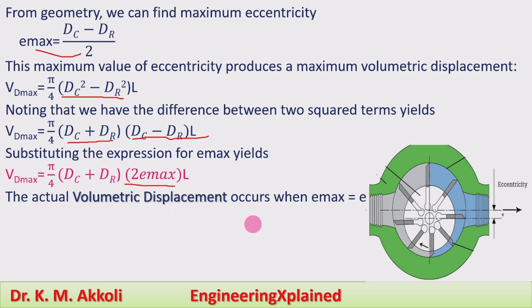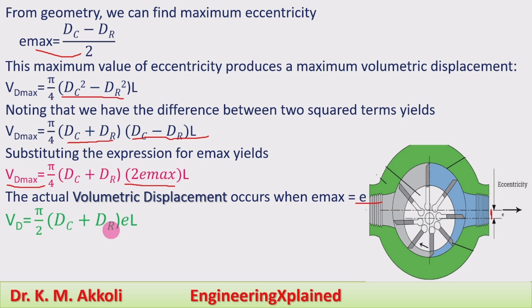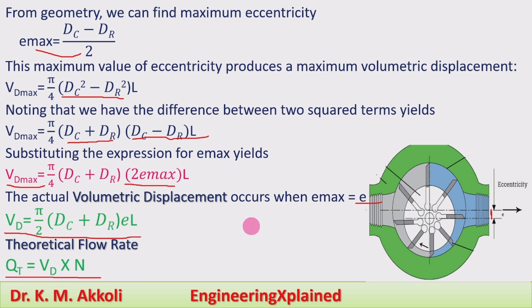For the actual volumetric displacement, when eccentricity is e (not necessarily e_max), the formula becomes: Vd = π/2 · (Dc + Dr) · e · L, where e is the distance between the rotor center and the cam ring center. The theoretical flow rate of the vane pump is Qt = Vd · N, the volumetric displacement multiplied by the rotational speed N.